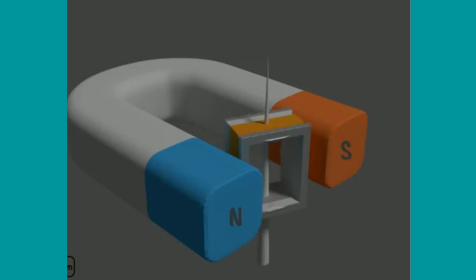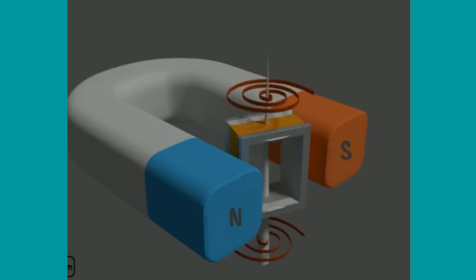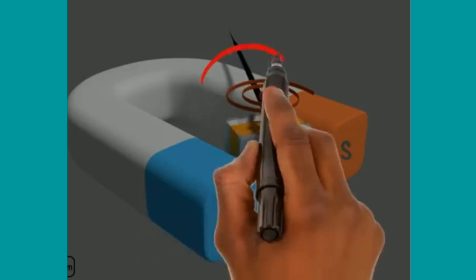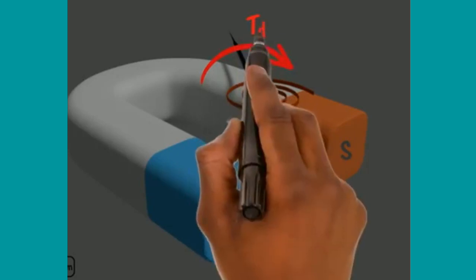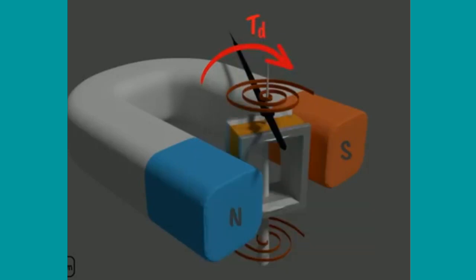The moving coil is the current-carrying part of the instrument, which freely moves between the stationary field of the permanent magnets. The current passing through the coil deflects it, by which the magnitude of the current or voltage is determined. The coil is mounted on a rectangular former made of aluminum.